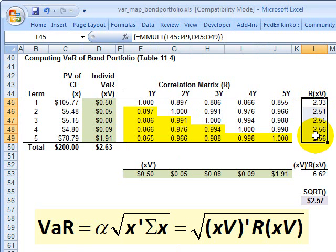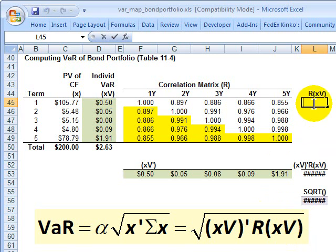And then we can start into the multiplication. If I just erase this part out, just to remind you, all we're going to do here is perform this matrix multiplication, which consists of vectors. I'm starting here with the correlation matrix multiplied by the individual VaRs.